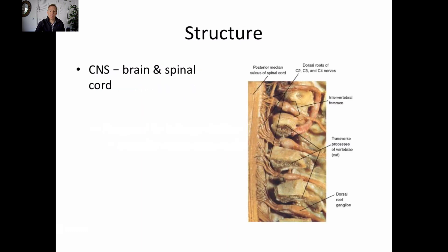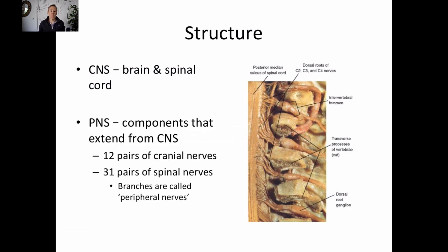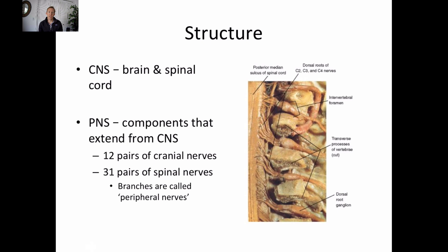Those are the three broad roles. When we look at structure, we have the central nervous system or CNS, which includes our brain and spinal cord. Then we have the peripheral nervous system, which are the components that extend out from the central nervous system. In this lecture we'll mainly talk about spinal nerves, but remember we've also got our 12 pairs of cranial nerves.